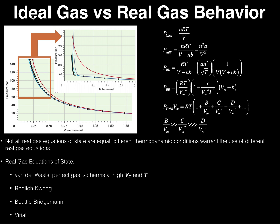In the past we talked about ideal gas behavior, which has to do with the ideal gas equation: pressure is equal to nRT over V. The ideal gas equation of state is derived from kinetic molecular theory, and there are several assumptions that go into that.